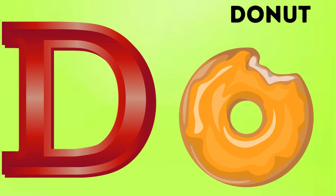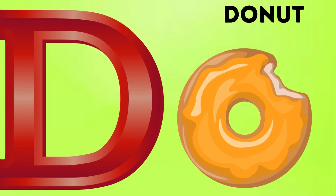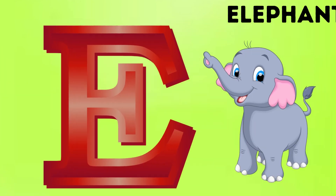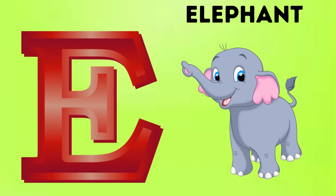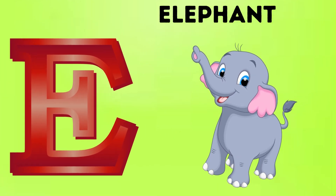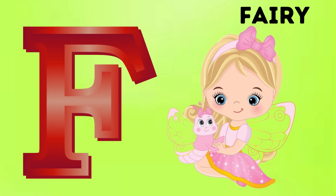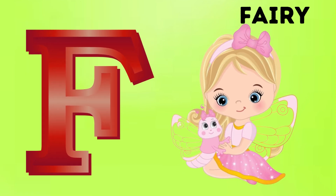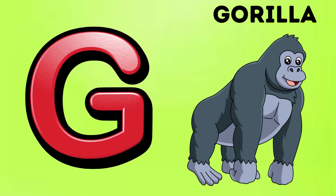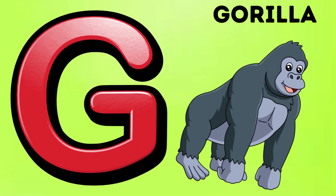Coconut. D is for Donut. Da, Da. Donut. E is for Elephant. A, A. Elephant. F is for Fairy. Fa, Fa.